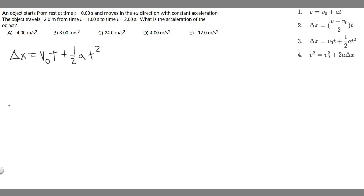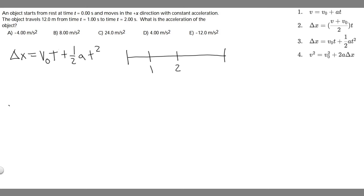The way we're going to do this is by understanding how this equation works. Basically, when we plug in a time value, it gives us the distance traveled during that time. So imagine a number line — I'll label 1 here and 2 here. When we plug in t equals 1, it gives us the distance traveled up to that point.